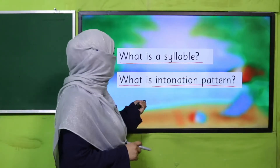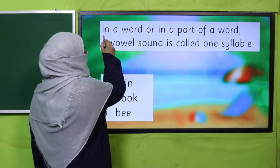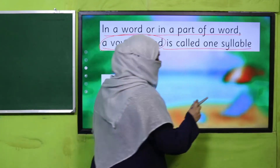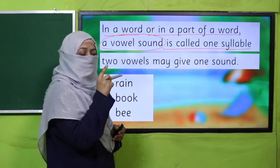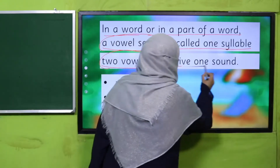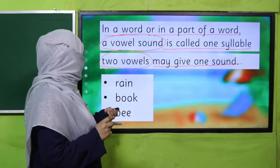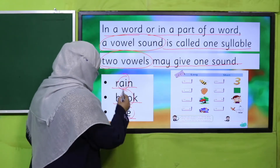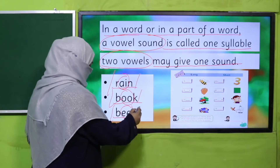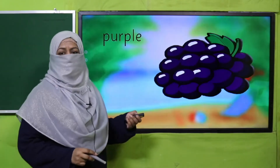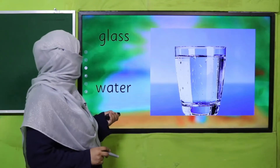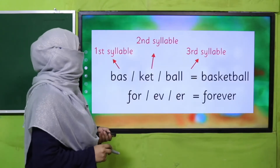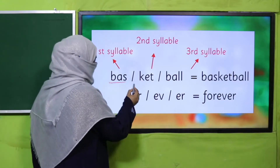I hope you could recall correctly. In a word, a vowel sound is called a syllable — a vowel sound. There can be two vowels which may give one sound. Examples are: rain, book — there are two vowels but one sound, so these are one-syllable words. To say 'purple' there are two syllables. 'Water' has two syllables. 'Basket' is a three-syllable word.